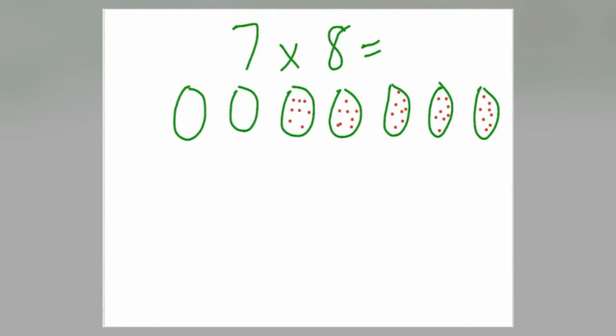What I can do now is count up each individual red dot that I have and find the answer, or I can do eight plus eight plus eight, seven times.